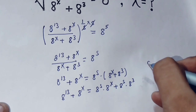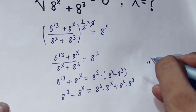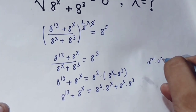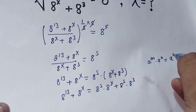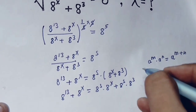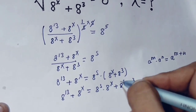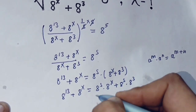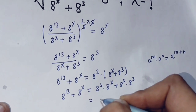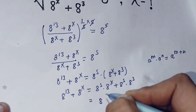I am using the formula: a power m times a power n equals a power (m plus n). Applying this formula here: 8 power 5 times 8 power x becomes 8 power (5 plus x), and 8 power 5 times 8 power 3 becomes 8 power 8.